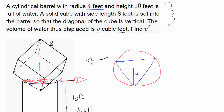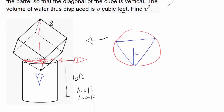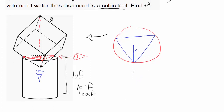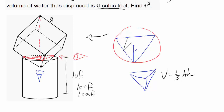Looking at it from the side, you can see a pyramid with an equilateral triangle as its base. We want to find the volume of this pyramid using the formula: one-third times the area of the base times the height. The base area is the area of the equilateral triangle, and we also need the height of the pyramid.